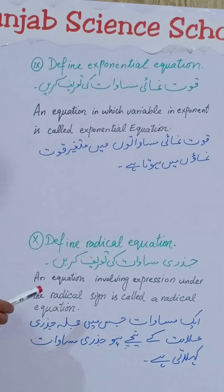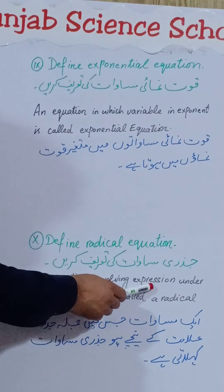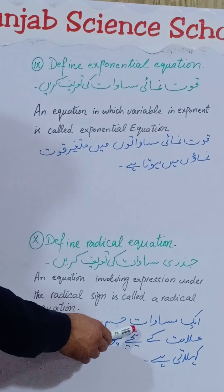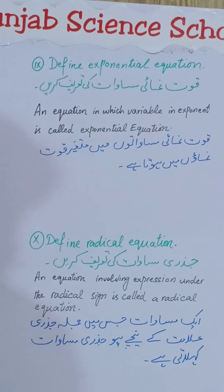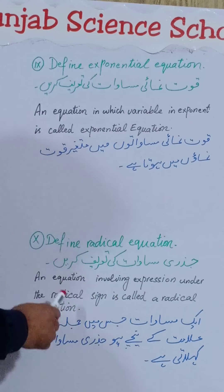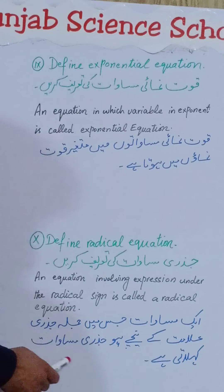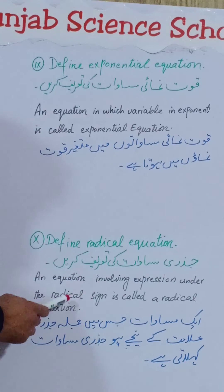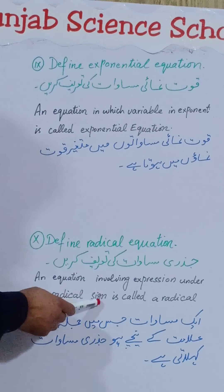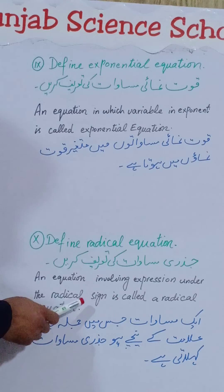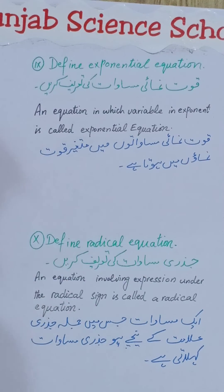10th Part — Define Radical Equation: جزری مساوات کی تعریف کریں۔ An equation involving an expression under the radical sign is called a radical equation. ایک مساوات جس میں جملہ جزری علامت کے نیچے ہو جزری مساوات کہلاتی ہے، یعنی پوری رقم کے اوپر جزر کی علامت (radical sign) ہو، ایسی equation کو جزری مساوات کہتے ہیں۔